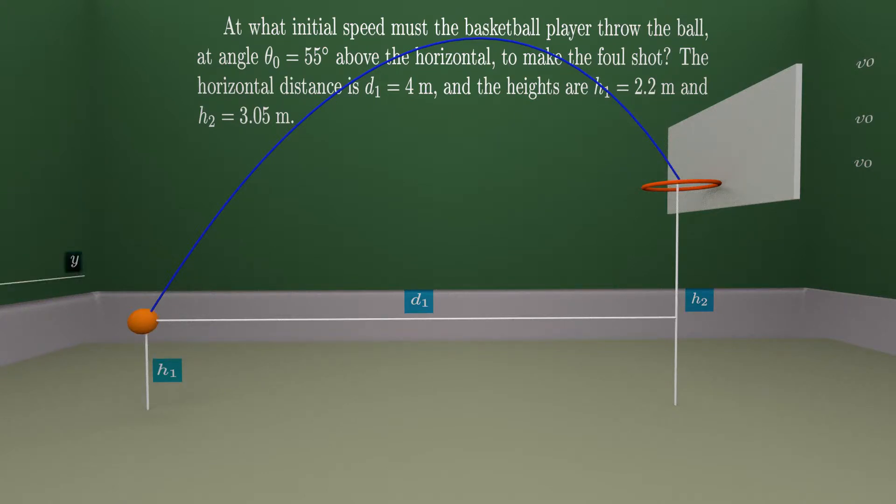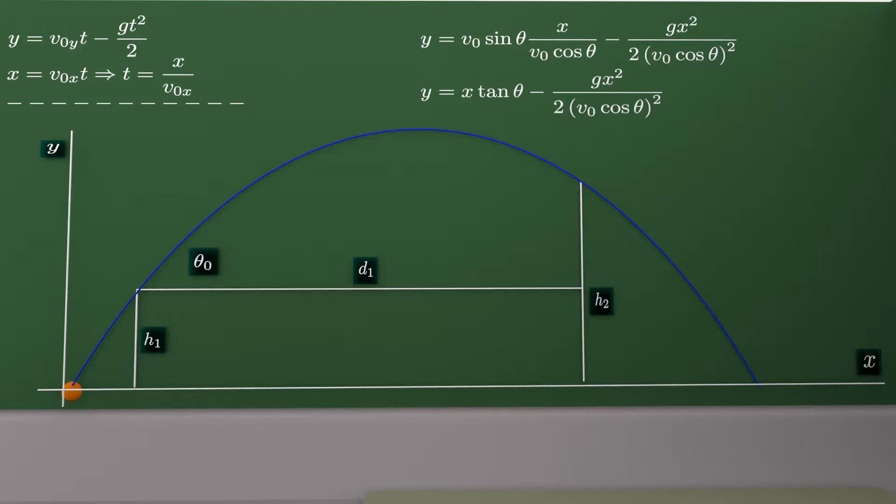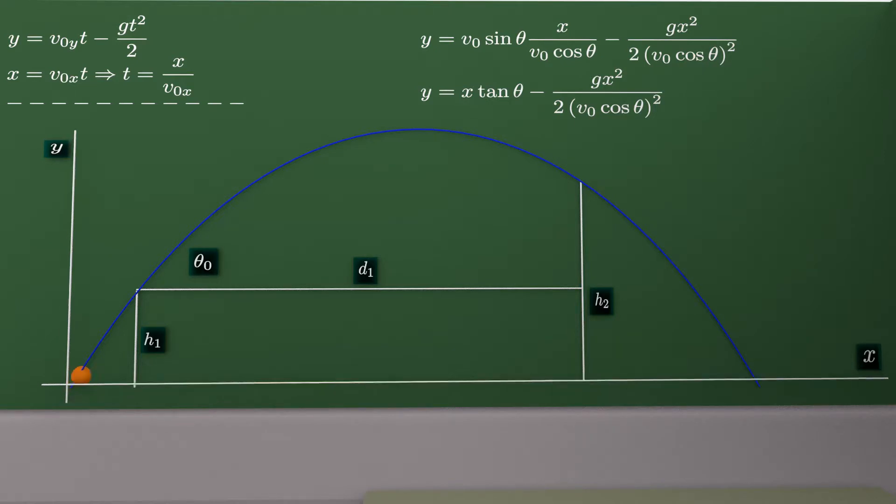We will analyze this motion as a projectile motion. Two points of the motion are very important. First one is at the beginning of the motion and the second one is of course this point here. We will use the trajectory equation of the motion to determine the initial speed. Important thing here is that the origin of the axis will be at the beginning of the motion.